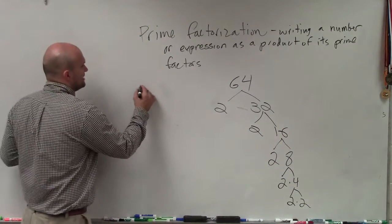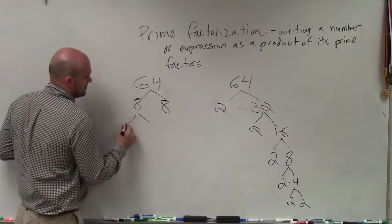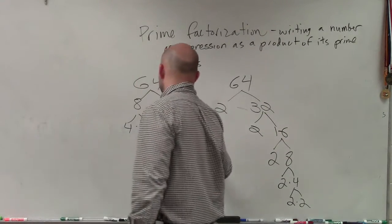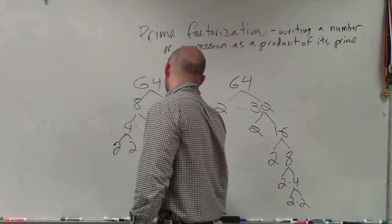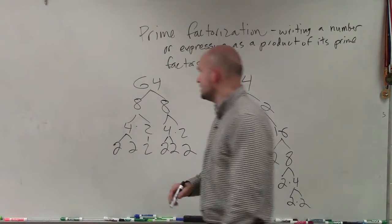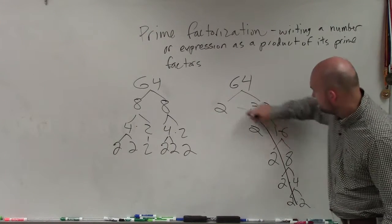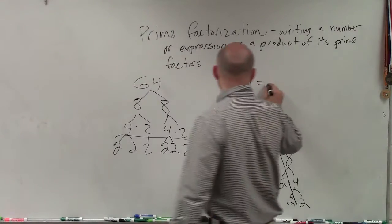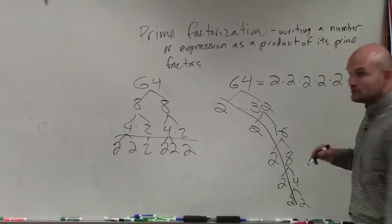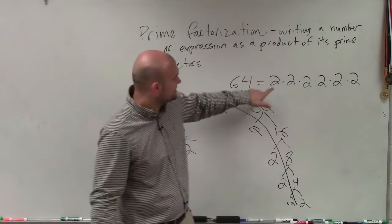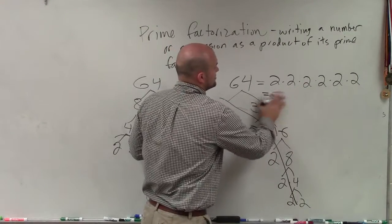This is a little more work. It'd probably be easier — or faster — if you just did 8 times 8, then 4 times 2, 4 times 2, giving you 2 times 2 times 2 times 2 times 2 times 2. Either way, you're still going to get the prime factorization of the number. For 64, that's 2 times 2 times 2 times 2 times 2 times 2 — which means 64 really equals 2 to the 6th power. You don't have to write it that way, but it's good to recognize it.